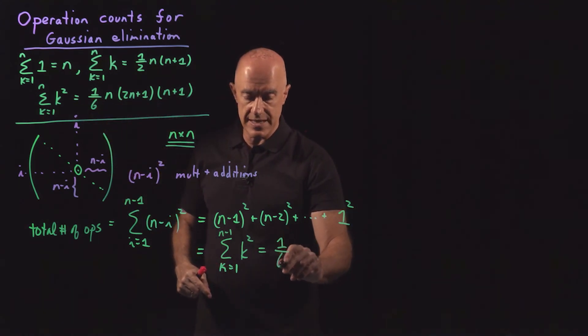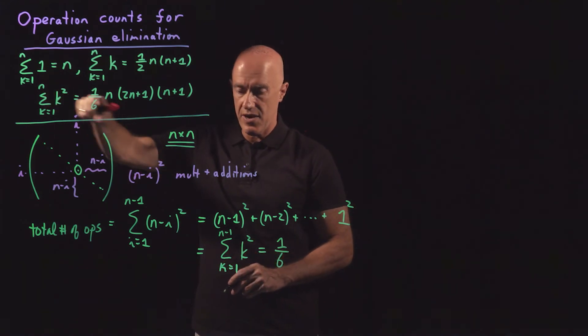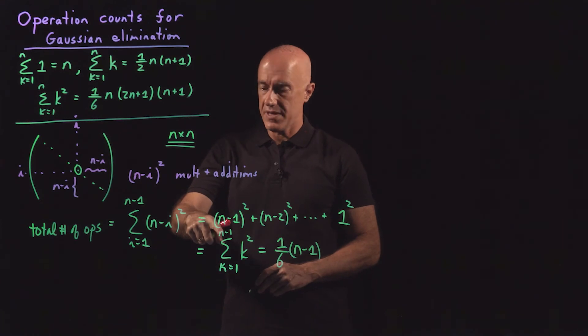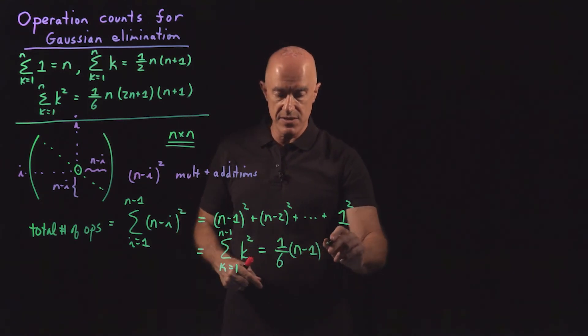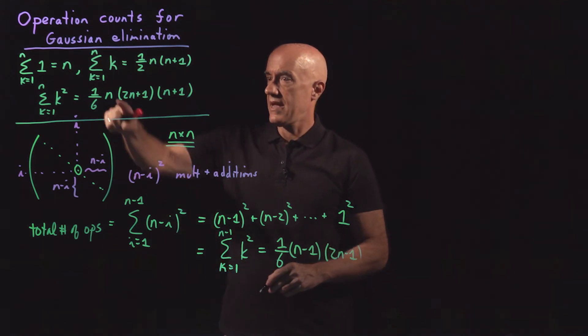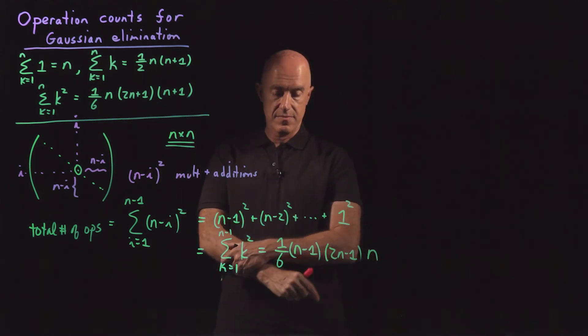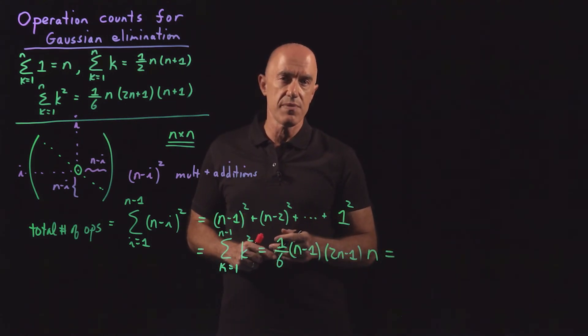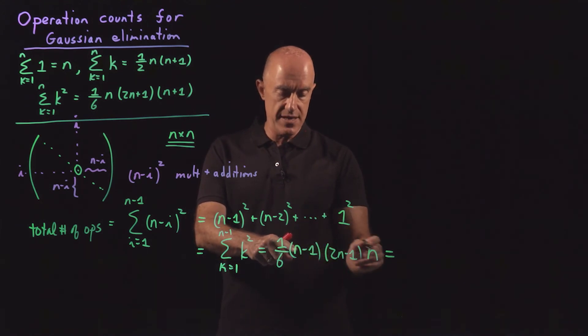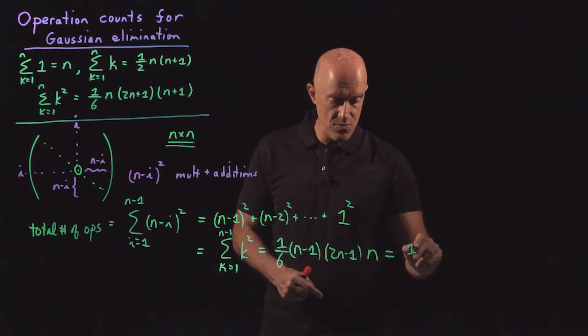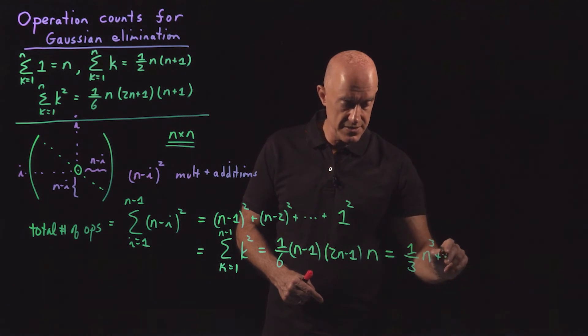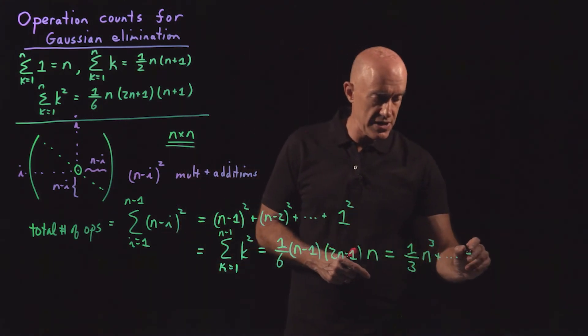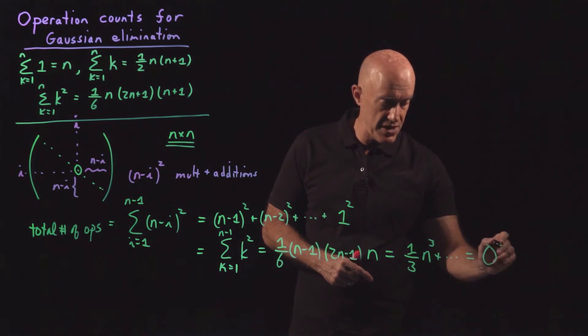Now we match our third formula here. So that's simply 1/6 times the upper limit. Here it's n. Here it's n minus 1. So that becomes 2n minus 2 plus 1, or 2n minus 1. And here it's n plus 1. So that becomes n. And then the leading order term is what interests us. That would be the n³ term. So we have n times 2n times n. So 2n³ divided by 6. So that works out to 1/3 n³ plus things that are smaller proportional to n² or proportional to n. And using our big O notation, that's just big O of n³.